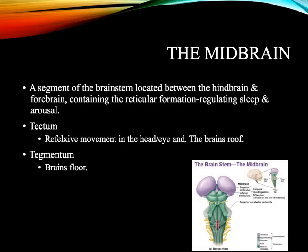The next part of the brain we'll discuss is the midbrain. The midbrain is a segment of the brainstem located at the top, just between the hindbrain and the forebrain. The midbrain consists of the tectum and the tegmentum. The tectum is responsible for reflex movement in the head and eye — if something's coming at you and you jerk your head to see it, or your eyes look at a fly, that reflex is controlled by the tectum. The tegmentum is the brain's floor, and not much is known about it.